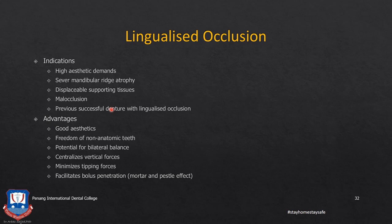Advantages of lingualized occlusion: good aesthetics — better than monoplane occlusion; freedom from non-anatomic teeth issues; potential for bilateral balance, as the palatal cusp of the maxillary posterior teeth is always in contact with the occlusal surface of the mandibular posterior teeth. The contact of the palatal cusp ensures forces are transferred in a vertical direction to the mandibular alveolar ridges, minimizing tipping forces due to centralization of vertical forces. Because anatomic teeth are used in the maxillary arch, there is a mortar-and-pestle effect, making chewing and shearing of food more efficient.